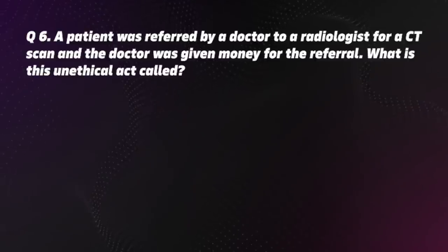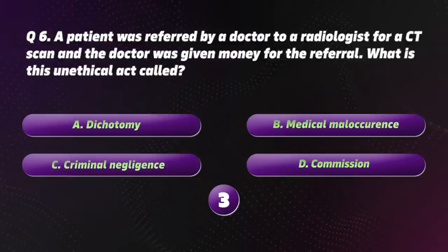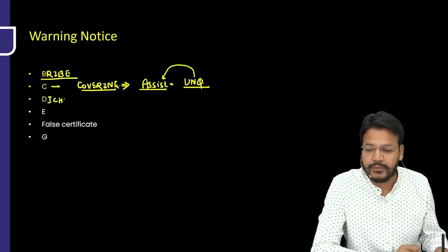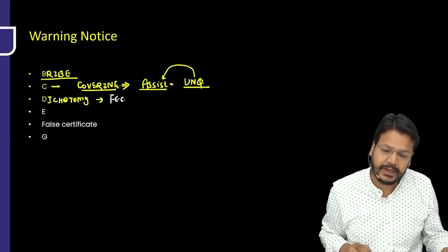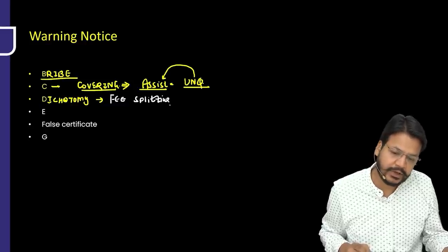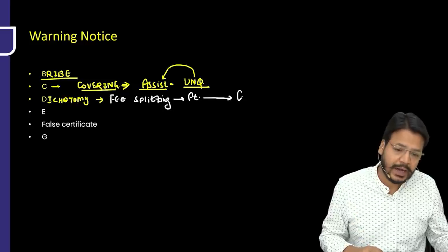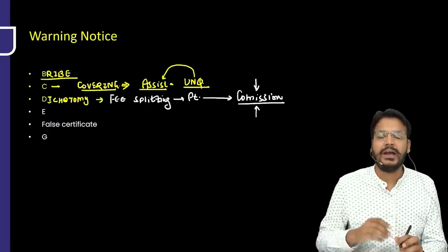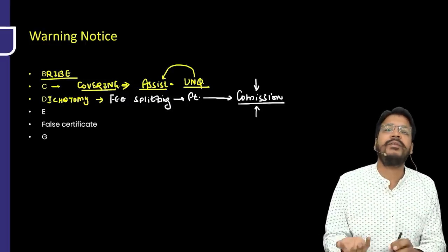Question 6. A doctor referred a patient to a radiologist for a CT scan and received money for the referral. This unethical act is called A — Dichotomy. Dichotomy means fee splitting — you take a fee from the patient and divide it as commission. Whether giving commission to a medical representative, pharmacist, or another doctor, or receiving commission — this is all known as dichotomy.